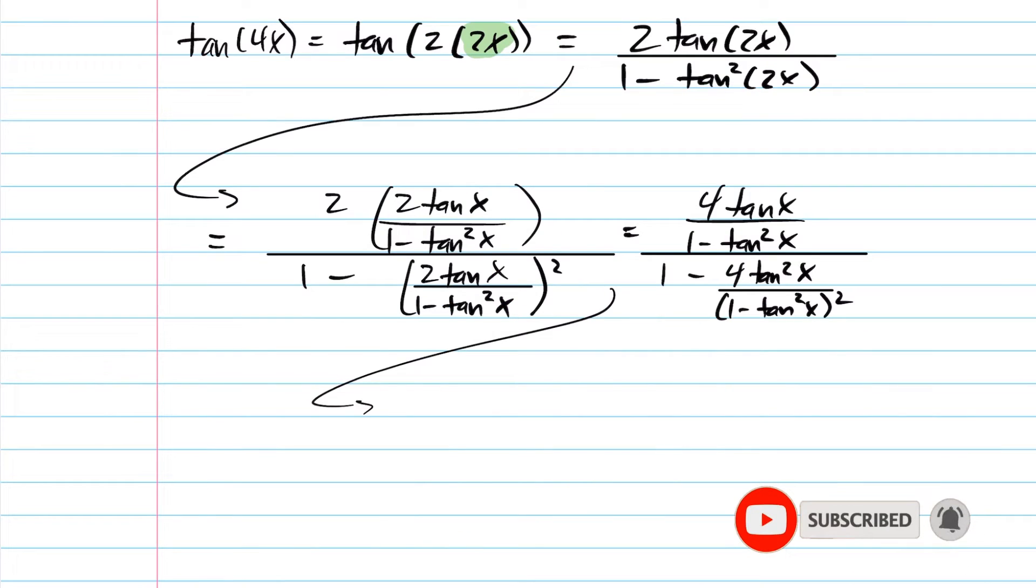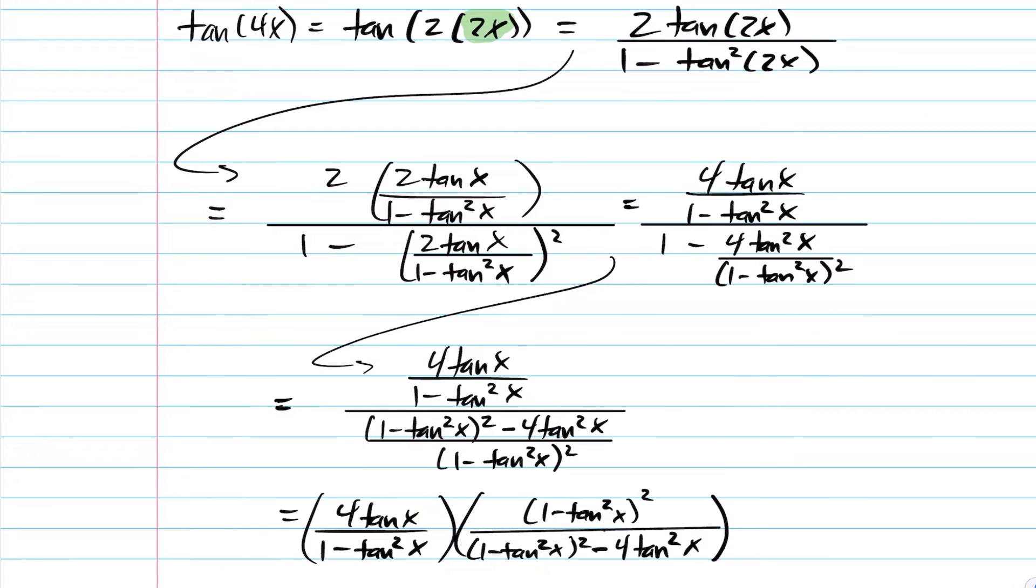Continuing on here, we want to go ahead and get a common denominator in the bottom and then multiply by the flip of this expression here. All right, I went ahead and got a common denominator here and then multiply by the flip. We have the following.